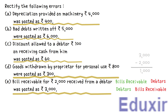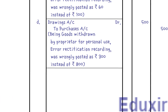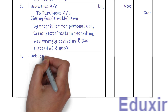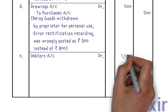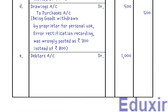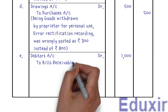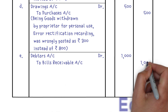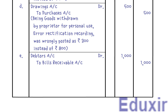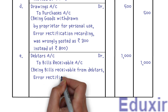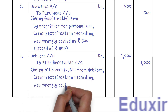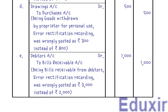With this analysis, let us proceed with journalizing these error rectification entries. We enter debtors account as the debit entry (Dr) with 1,000 rupees. The credit entry is bills receivable account with 1,000 rupees. The narration reads: being bills receivable from debtors, error rectification recording — was wrongly posted as 3,000 rupees instead of 2,000 rupees. With that, we have completed all the error rectification entries. That is the end of this solution.